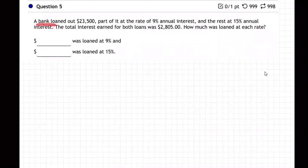Okay, so a bank loaned out $23,500, part of it at 9% annual interest, and the rest at 15%. The total interest earned on both loans was $2,805. How much was loaned at each rate?